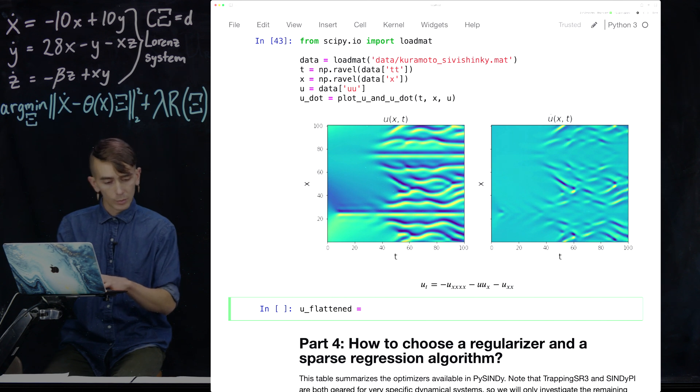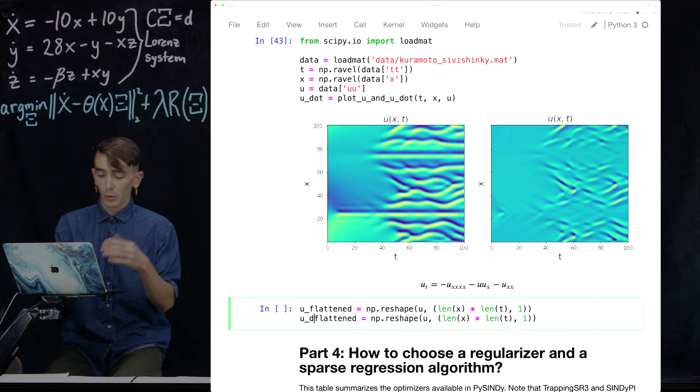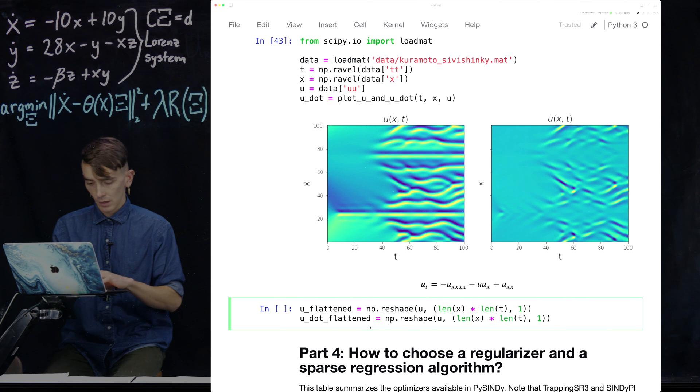We just define these flattened variables. So we reshape U and we just reshape it to be flat. So the length of X times the length of T by one. And then we do the exact same thing for U dot. So the temporal derivative of U.